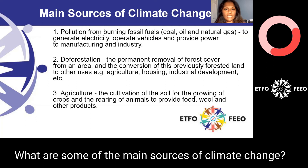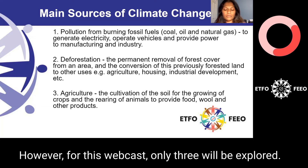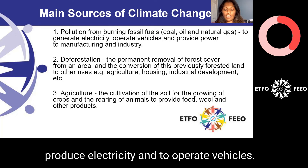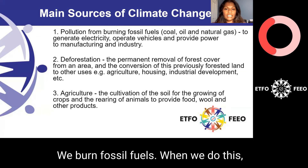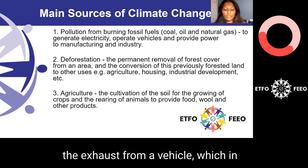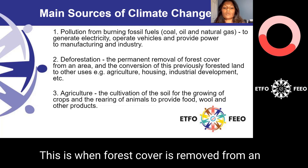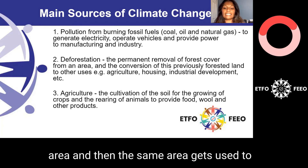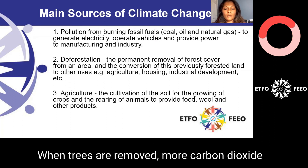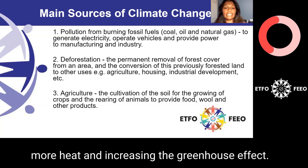What are some of the main sources of climate change? There are many factors contributing to our climate crisis, but for this webcast only three will be explored. First, the burning of fossil fuels — to produce electricity and operate vehicles, we burn fossil fuels, which produces a lot of pollution such as vehicle exhaust, which gets released into the atmosphere. Second, deforestation — when forest cover is removed and the same area is used for agriculture, housing, and industrial development, more carbon dioxide gets added into the atmosphere, trapping more heat and increasing the greenhouse effect.